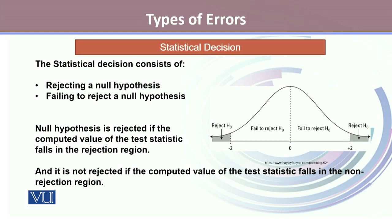In this process of decision-making, either we are rejecting a null hypothesis or we are failing to reject a null hypothesis. A null hypothesis is rejected if the computed value of the test statistics falls in the rejection region.